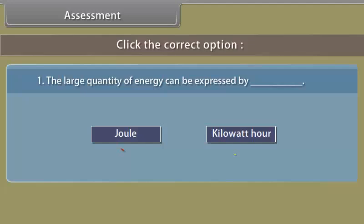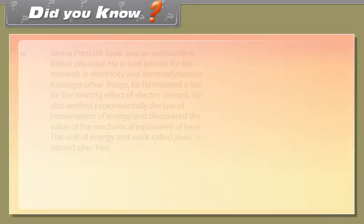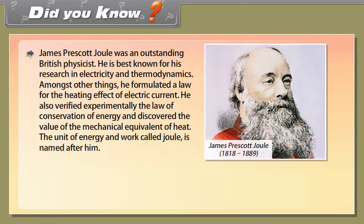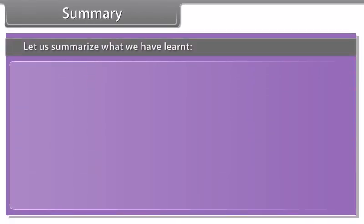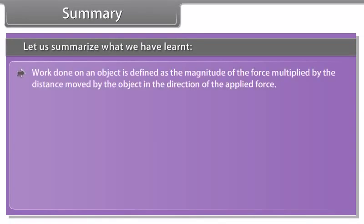One kilowatt hour is equal to 3.6 × 10⁶ joules. The energy used in our houses and big industries is usually expressed in kilowatt hours. James Prescott Joule was an outstanding British physicist best known for his research in electricity and thermodynamics. He formulated a law for the heating effect of electric current, verified experimentally the law of conservation of energy, and discovered the value of the mechanical equivalent of heat. The unit of energy and work called joule is named after him. The potential energy of an object at a height depends on the ground level or the zero level you choose.